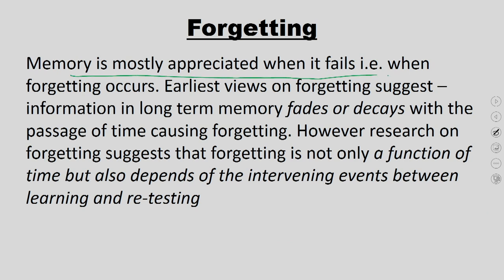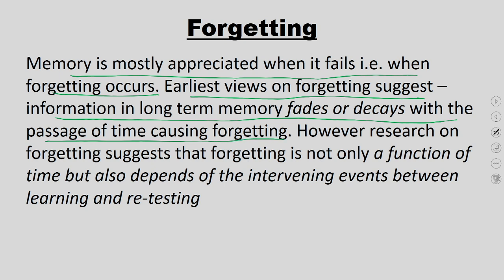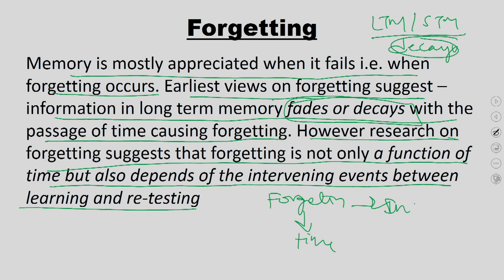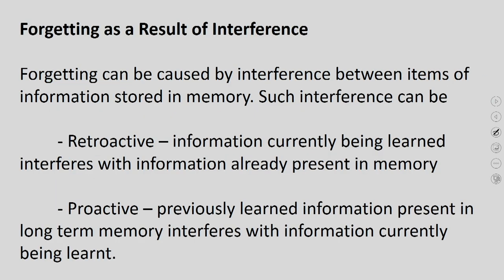Memory is most appreciated when it fails — that is, when forgetting occurs. Earlier views suggest information in long-term memory fades or decays with time. However, research suggests forgetting is not only a function of time but also depends on intervening events between learning and retesting. Forgetting as a result of interference: forgetting can be caused by interference between items of information stored in memory.